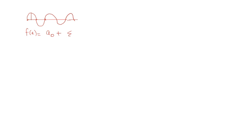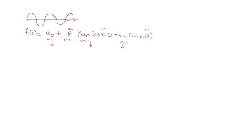The formula for the Fourier series conversion is: a₀ plus sigma from n equals one to infinity of (aₙ cos nθ + bₙ sin nθ). Here, a₀ is the constant term, and aₙ and bₙ are the coefficients of cos nθ and sin nθ respectively.